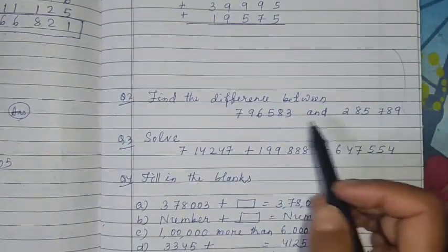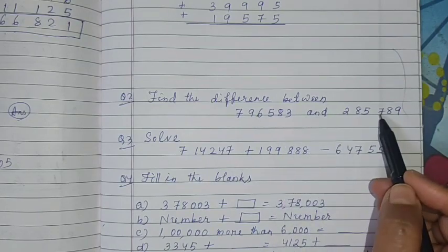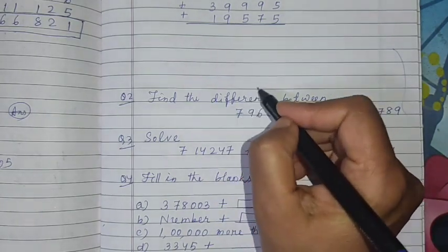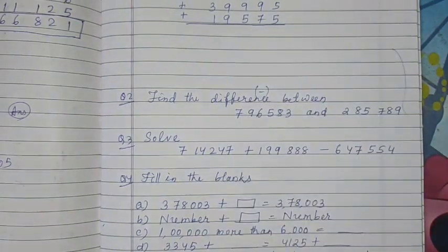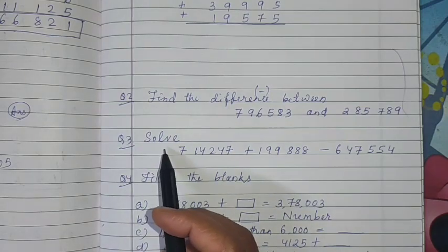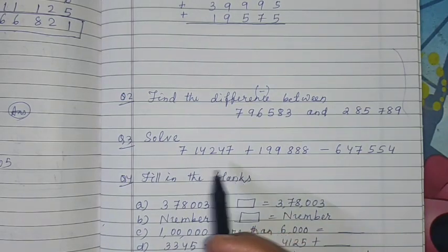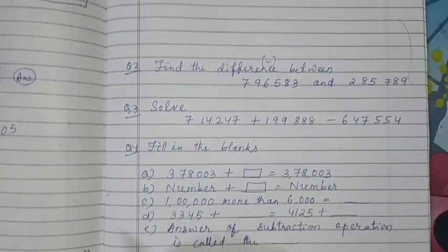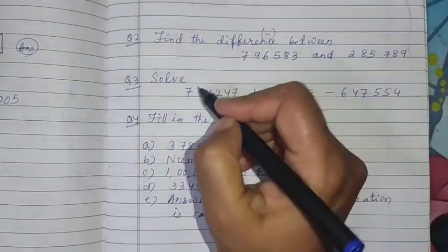Find the difference between these two numbers. I have told you always try the bigger number first, smaller number down. Difference means to subtract. You do arrange in this way and write. Don't write only answer, you have to arrange the number.